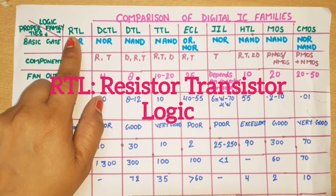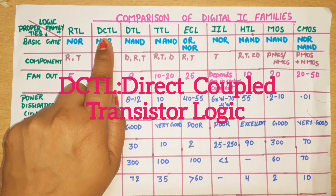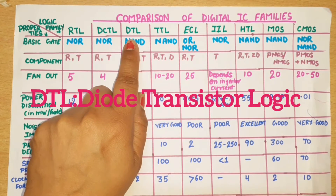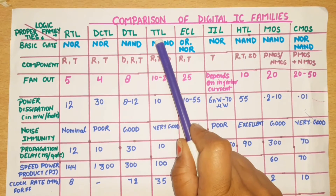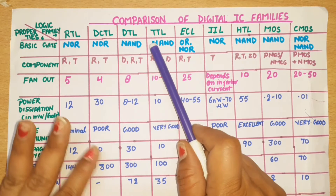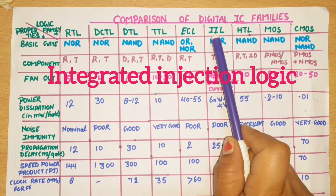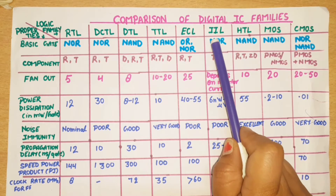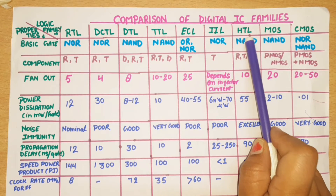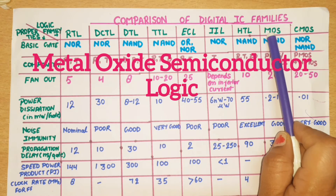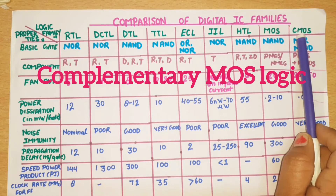RTL is the Resistor Transistor Logic. DCTL is the Direct Coupled Transistor Logic. DTL is the Diode Transistor Logic. TTL is the Transistor-Transistor Logic — it has types: open collector, totem pole, and tri-state. ECL is the Emitter Coupled Logic. I2L, also known as I²L, is the Integrated Injection Logic. HTL is the High Threshold Logic. MOS uses MOSFET transistors — it can be PMOS or NMOS. CMOS uses Complementary MOSFET transistors.